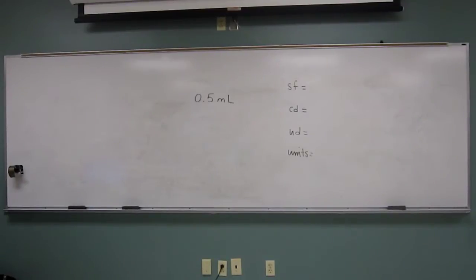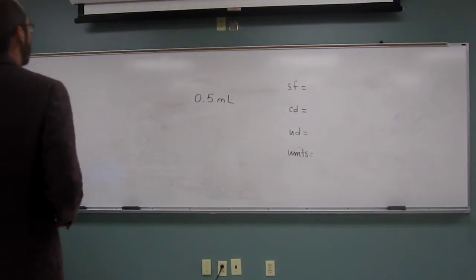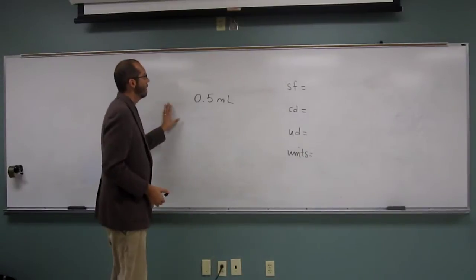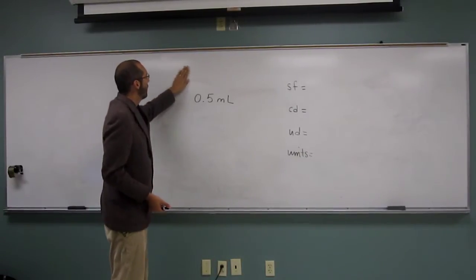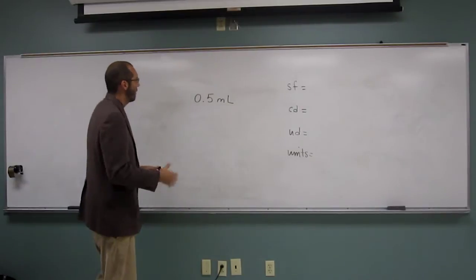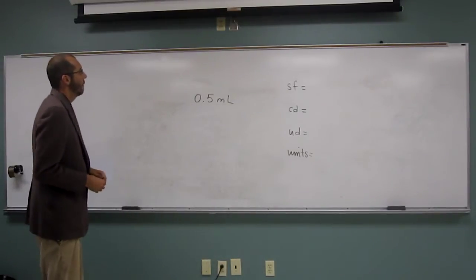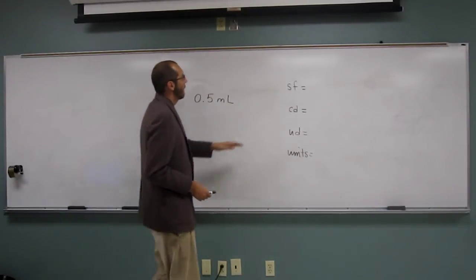Okay, so we're going to do one of these review problems for chapter one. We're going to look at a number that was given to us as a measurement, or that we got as a measurement in the lab. And we're going to determine some things about it.